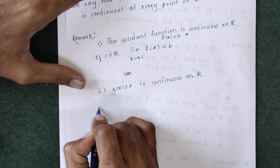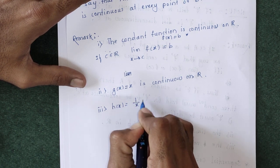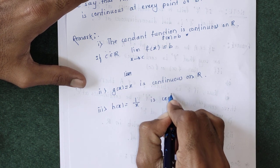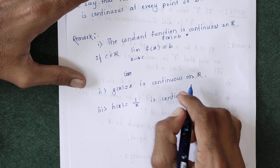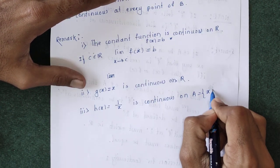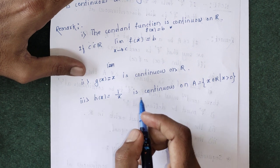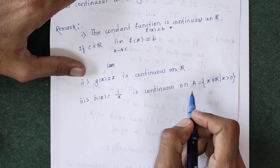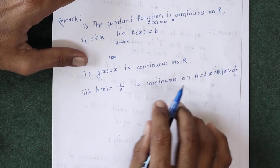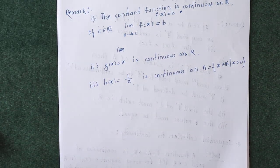If we take h(x) = 1/x, then this function is continuous except at 0. This function is continuous on the set A = {x belongs to R such that x greater than 0}. This shows that h(x) is continuous at every point except 0. We will see some more definitions in the next lecture.